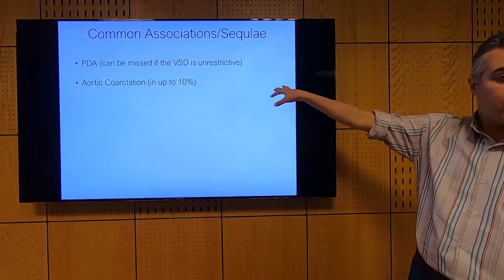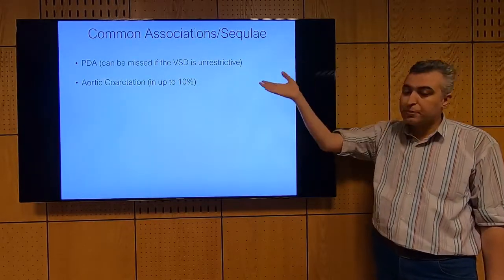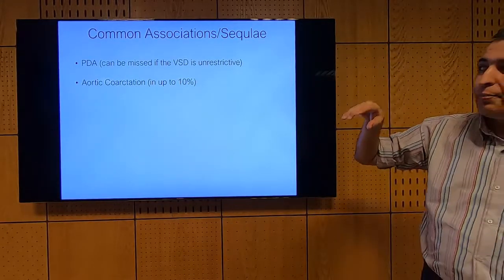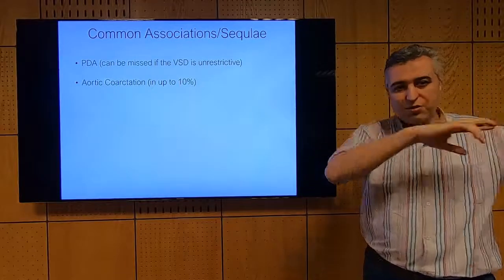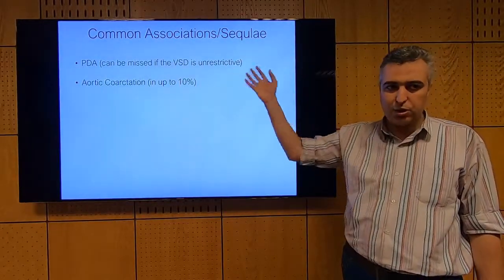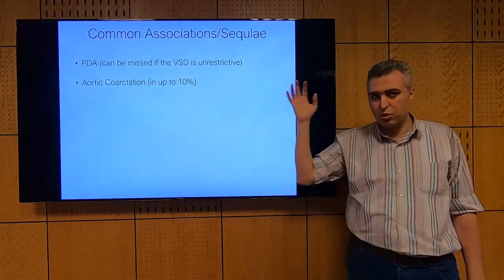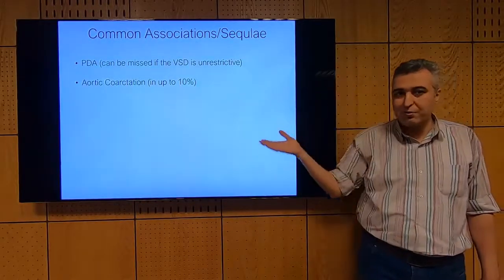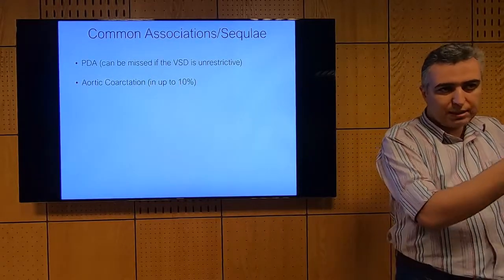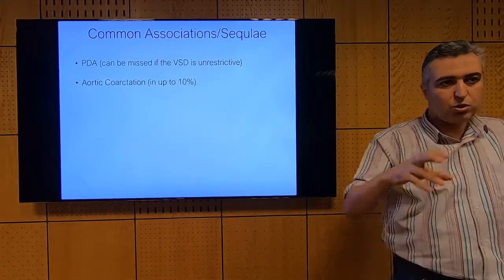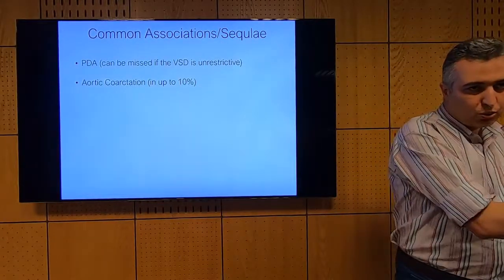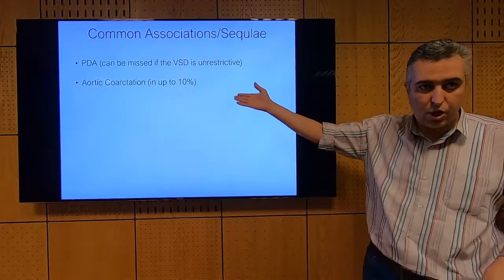Aortic coarctation is a common association, occurring in up to 10% of cases. A VSD can actually cause the coarctation — one theory is the flow theory, where during fetal life the flow across the distal arch is less than normal because of the VSD. Obviously, coarctation can occur alone without a VSD, but this is a common association.